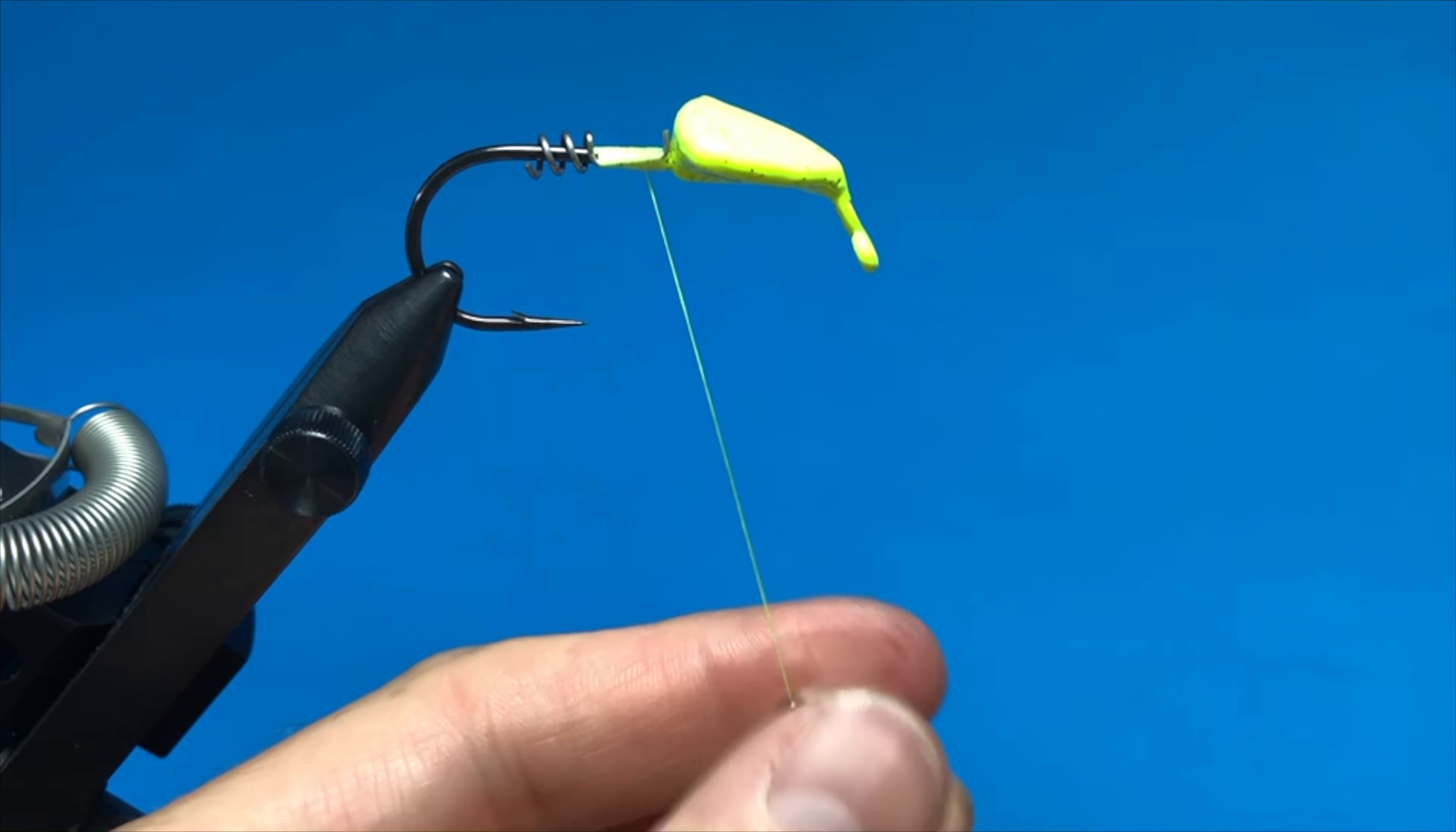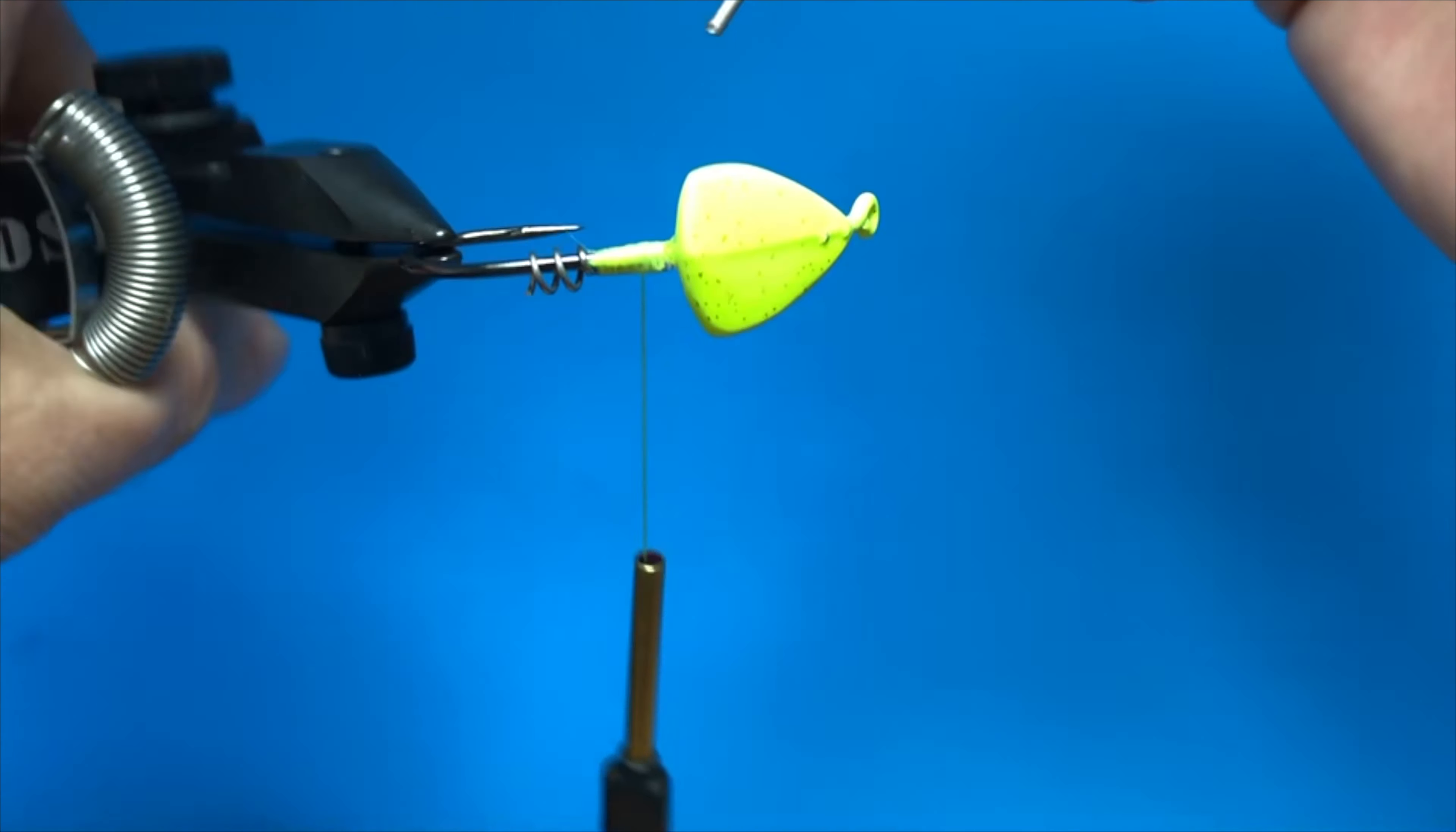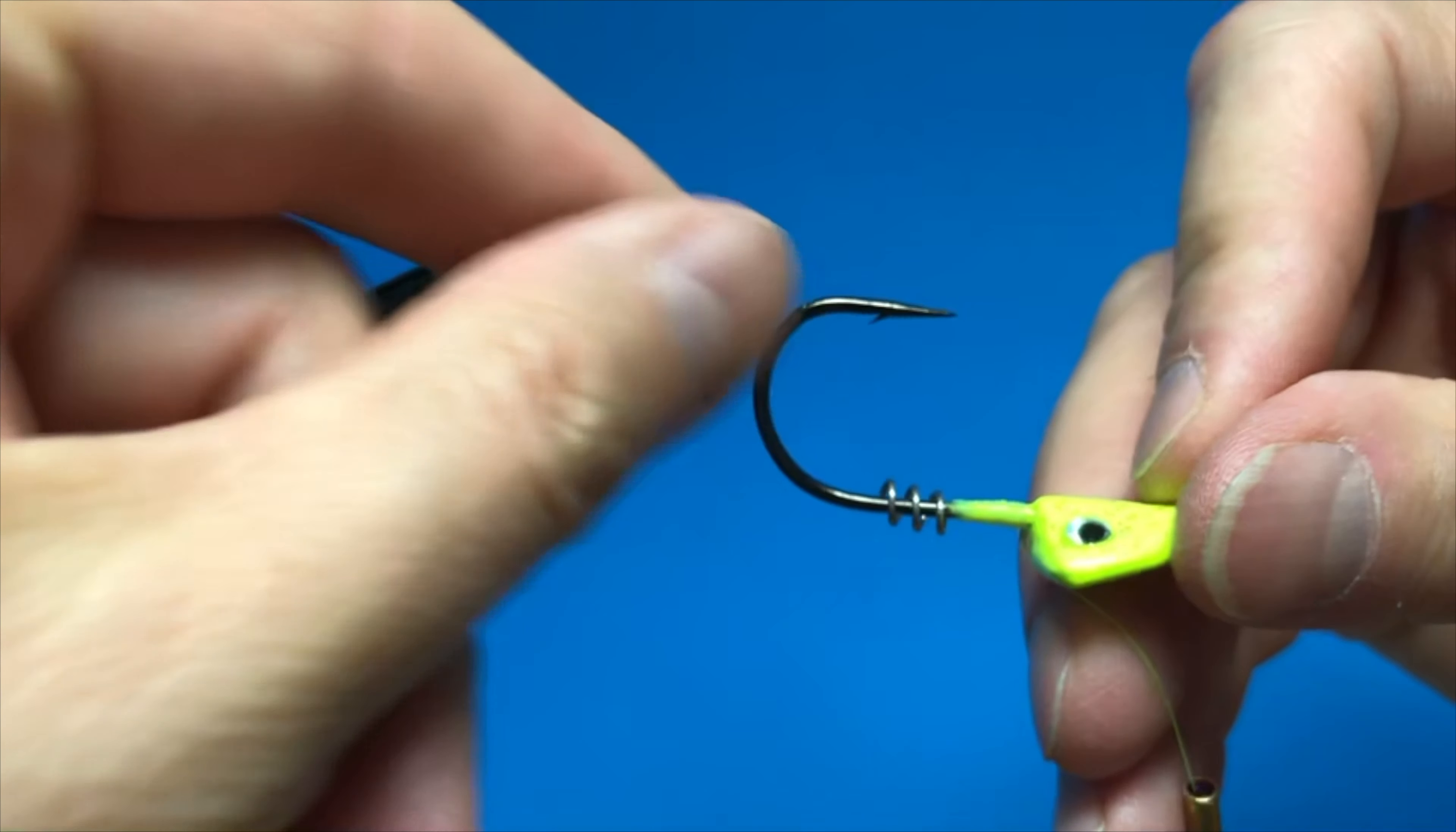For this one you leave yourself materials. This could work for bucktail but I prefer rabbit of course. You tie your materials right here. After you're done, you have that screw lock right there that can anchor your soft plastic.